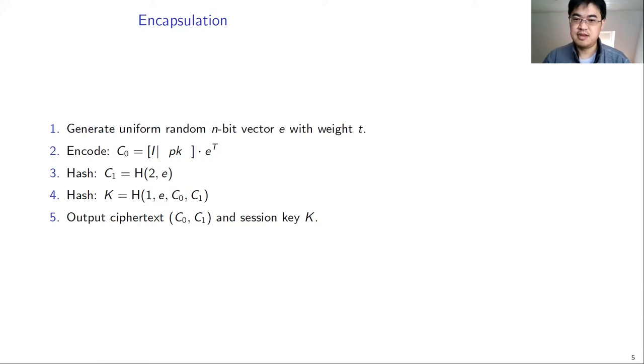Then we proceed to the second operation of the classic mechanism, the key encapsulation. This page shows the details of the encapsulation operation. It first generates a uniform random message with a fixed weight T. Then it performs a matrix-vector multiplication. This is the most time-consuming operation in the encapsulation. It multiplies the public key matrix by the random message generated in the previous step. We will talk about the two steps in the later slides. After the random message is generated and the matrix-vector multiplication is done, we can then produce the ciphertext and the shared key with the H functions.